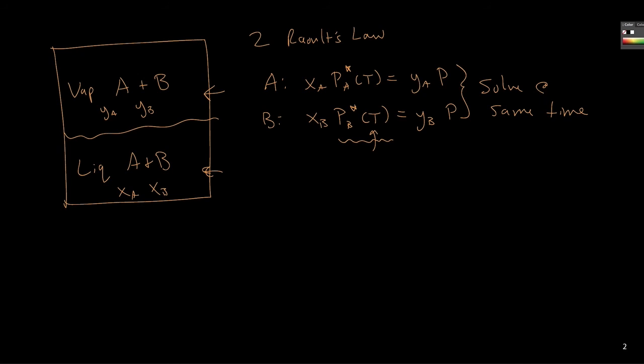Now one simplification to Raoult's Law is with one condensable component. Now this could be a system, most commonly, humidity, where we could have pure water, and then we have water vapor, and air.